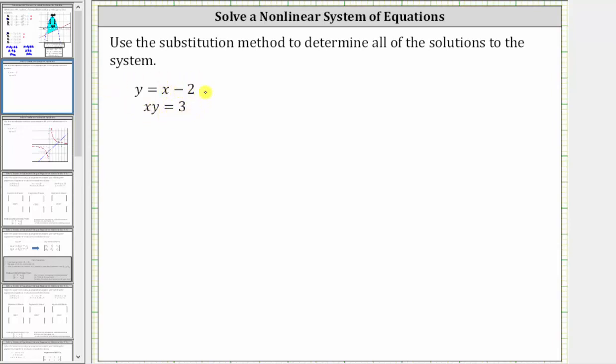Because the first equation is solved for y, we will use the first equation and perform a substitution into the second equation. Since y is equal to x minus two, we can substitute x minus two for y in the second equation.